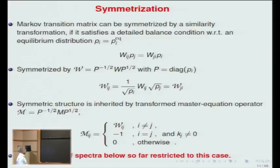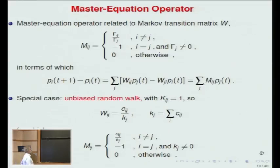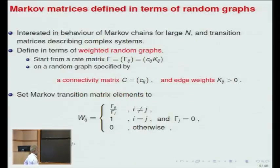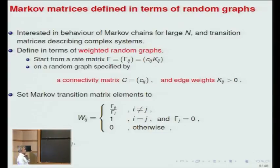There is actually one rigorous result I'm aware of: if you use this construction with gamma matrices, and the gamma_ij are arbitrary, then if you are on a large fully connected graph, the spectrum of the matrices in the limit N goes to infinity turns to the uniform measure on the unit disk. This is work by Bordenave and company some three or four years ago.